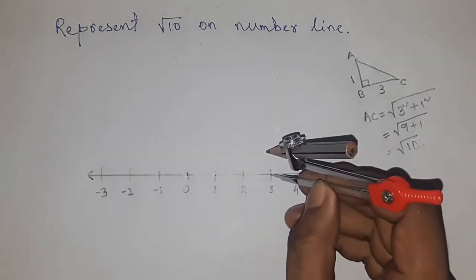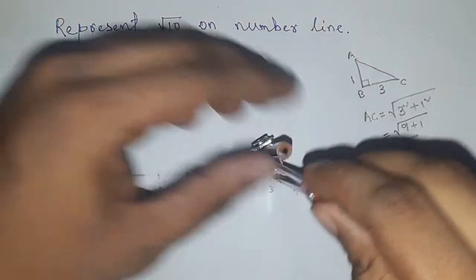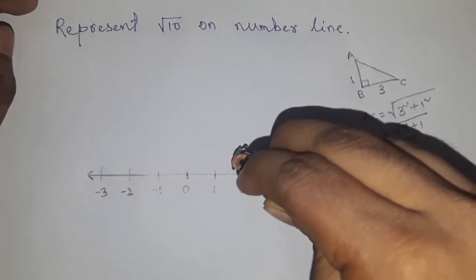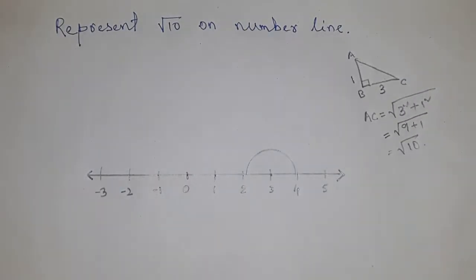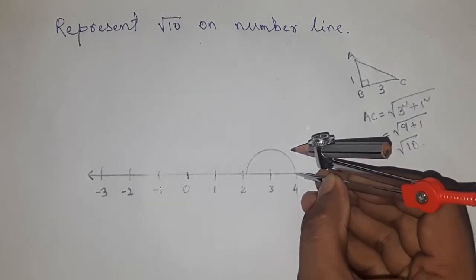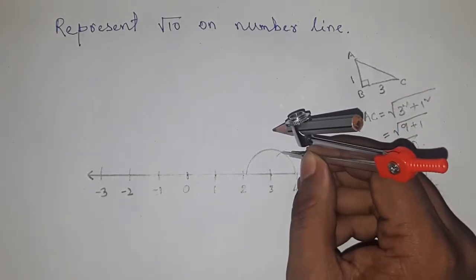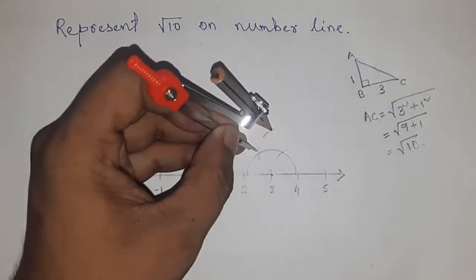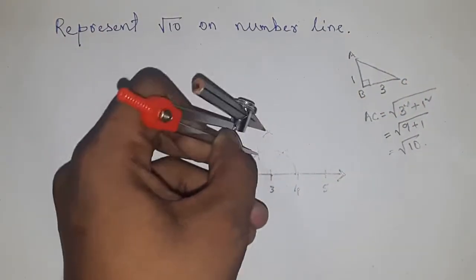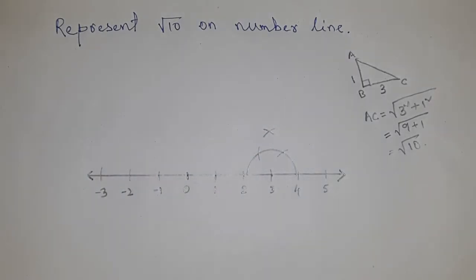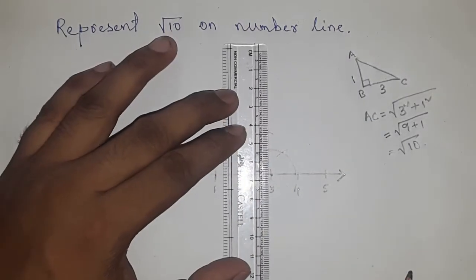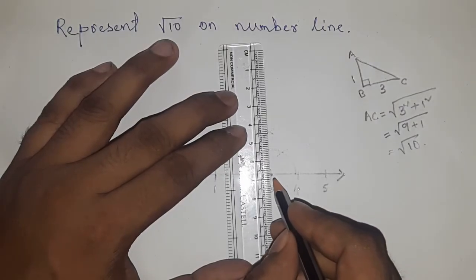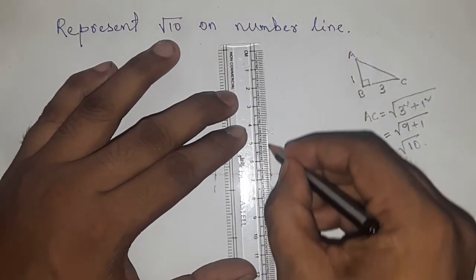First of all, we have to draw a 90 degree angle on point 3. If you don't know how to construct a 90 degree angle, then please watch my video which I have in my channel. Now drawing the 90 degree angle on point 3 and joining to get 90 degrees on 3.